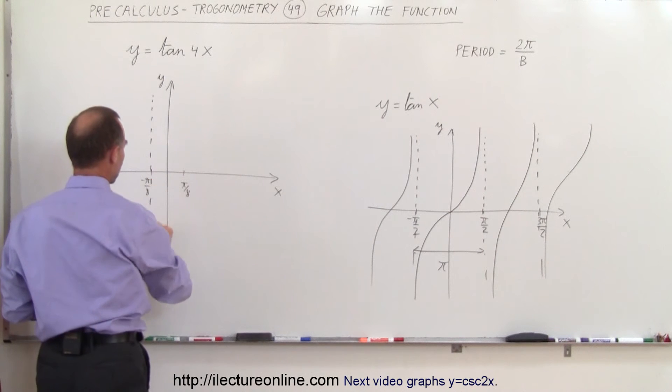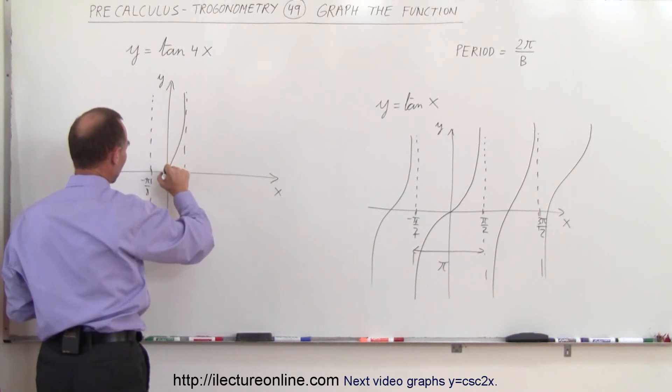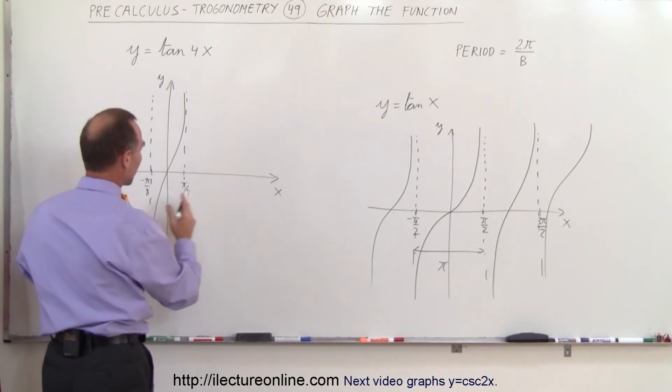And then we have the asymptote lines over here, and one over here, and again the tangent function will look exactly the same, except a lot skinnier, so to speak, goes right to the origin, and here, and then it repeats again.